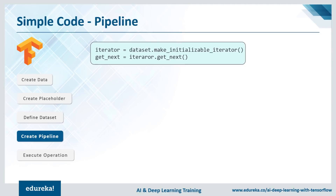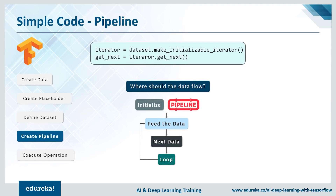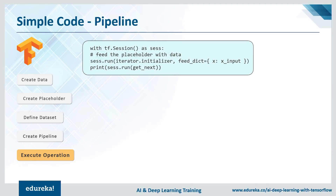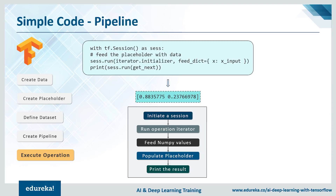The data flow is pretty simple. First, you initialize the pipeline and feed the initial data. After that, we loop over the data until all of it is consumed. That brings us to the last step: execution. All operations happen within a session, so we start the entire process by starting a session and printing out the output by running it. To sum it up, execution is the initialization of the session and then the session run operation is executed by the iterator feeding values to the pipeline. NumPy values are populated by the placeholders, then we print the results.